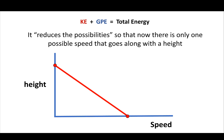When you know the total energy, there's only one possible speed for every height. If the apple is at maximum height, it has no speed. If it's going at the fastest possible rate, it's not high off the ground. For every single height, you can figure out the one associated speed.